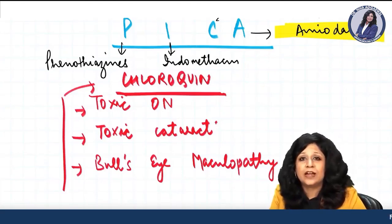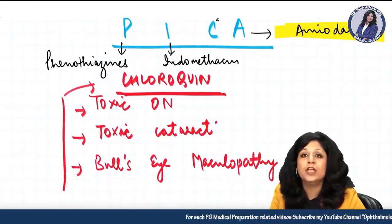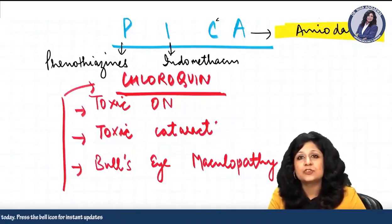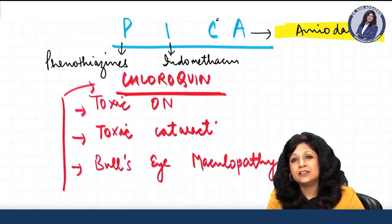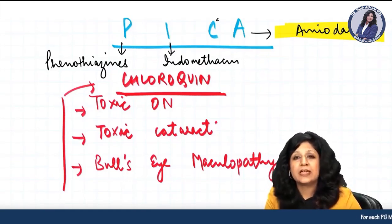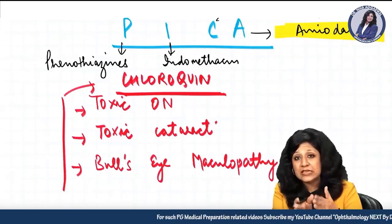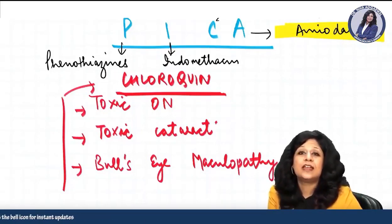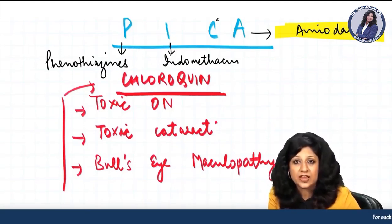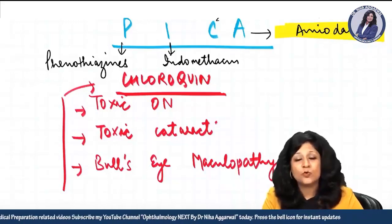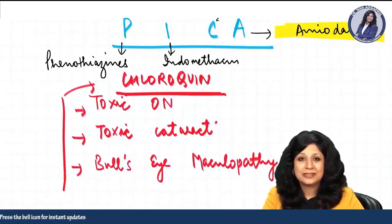These are the important anti-glaucoma drugs. All aspects — mechanism of action, indications, and contraindications — are very important. When solving MCQs, especially true/false or assertion-reason types, comparative study is more important than memorizing individual drugs. You need to understand why a drug is used and why it causes a particular adverse reaction.